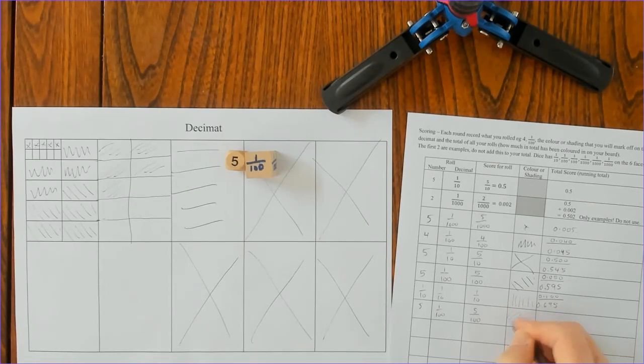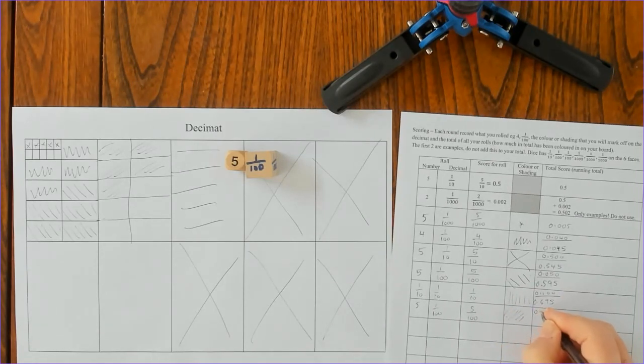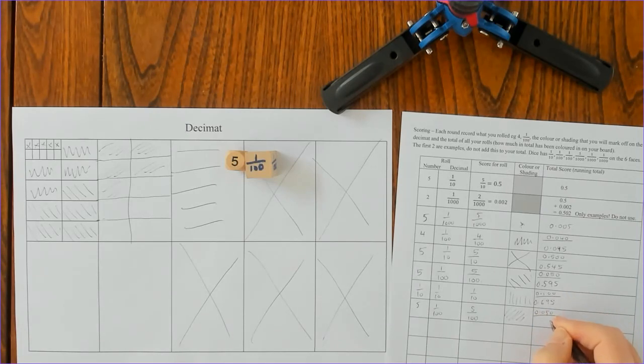Five one hundredths, and I did it this way, so now I've got to add in my five one hundredths. Now I've got five... there you can see what I've got.